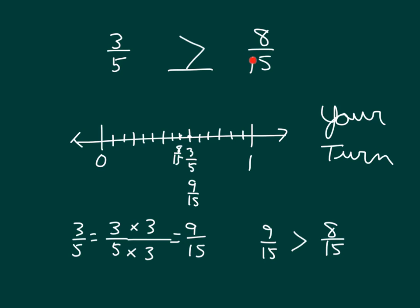Again, to get from 5 to 15, I multiplied by 3, so that I have common units to compare. Once I have common units and a common denominator, then I can just compare the numerators, and I know that 9 is bigger than 8.